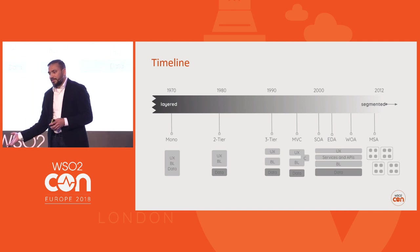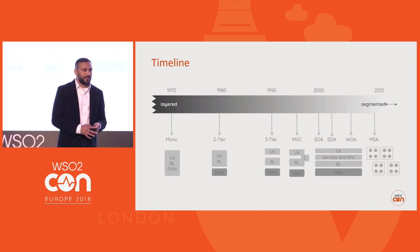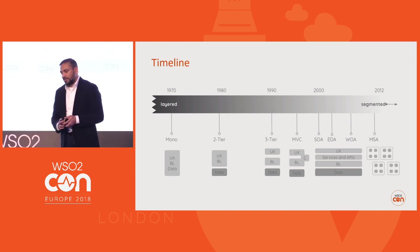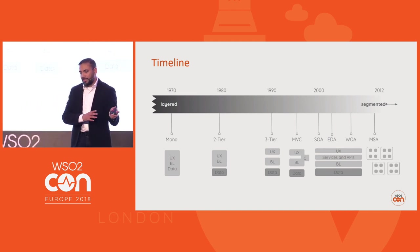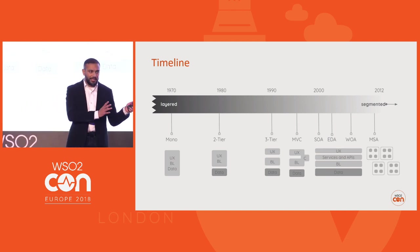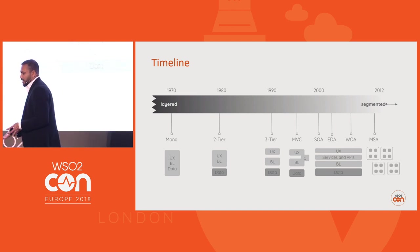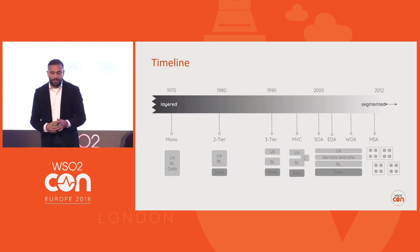Then microservices architecture came into the picture, theoretically explaining a more segmented architecture than a layered one. The summary is that there are two spectrums: layered architectures and segmented architectures, as well as combinations in between.